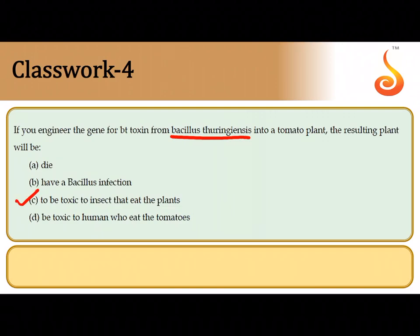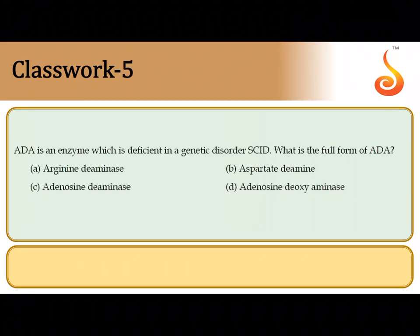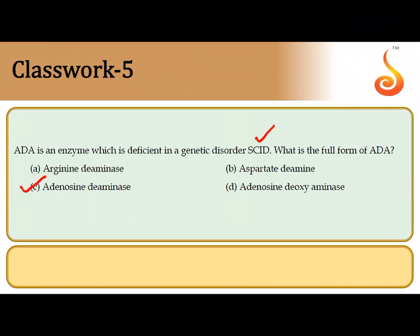The fifth question: ADA is an enzyme which is deficient in a genetic disorder called severe combined immunodeficiency (SCID). ADA is a very important enzyme in T cells. Its full form is adenosine deaminase. So the correct answer is option C.